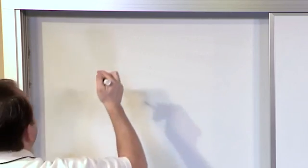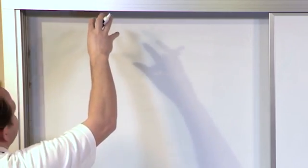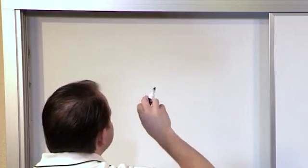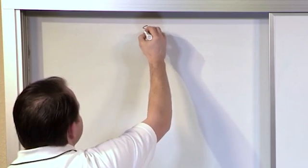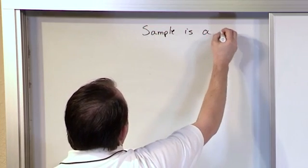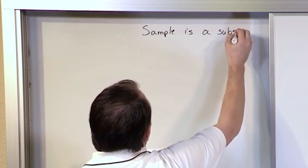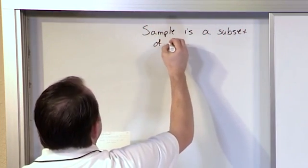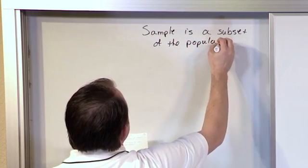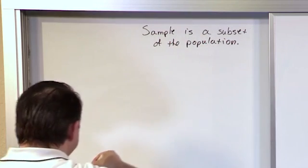So the first thing I want to point out is drawing a picture of something that I've talked about already. We talked about the idea of a population and we've talked about the idea of a sample. So to summarize that, we can say that a sample is a subset of the population that you care about. And we've given lots of examples of populations.